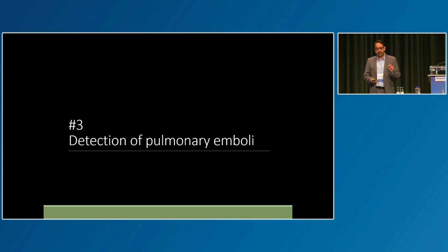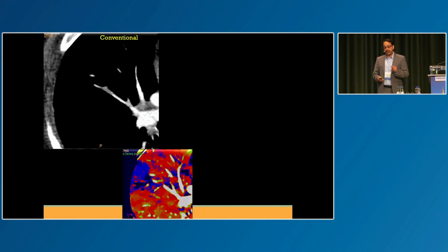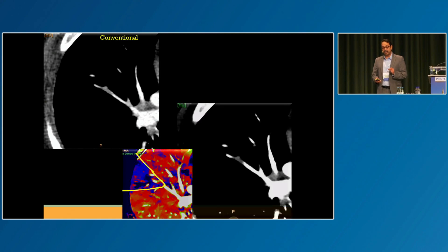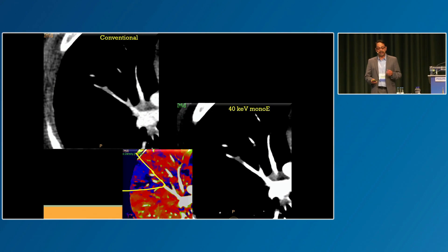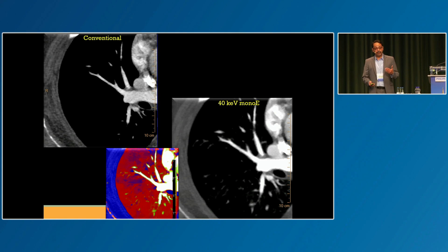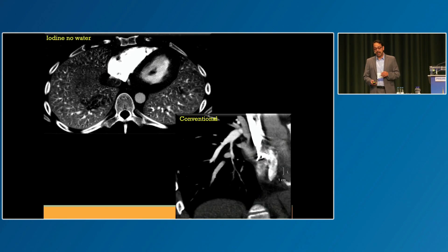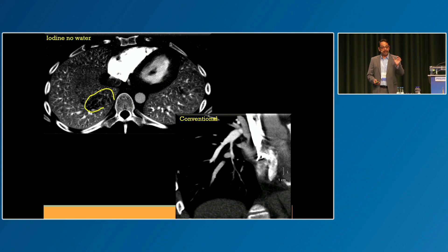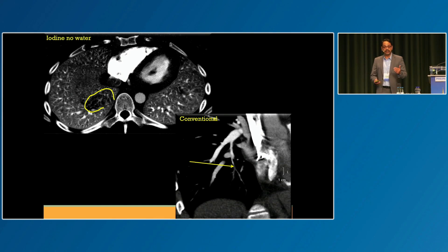It used to be that we could not diagnose sub-segmental PEs with any degree of confidence. But with spectral CT, I look for the perfusion defect on the iodine map, look at the 40 keV images, and you can diagnose this small sub-segmental PE with a really high degree of confidence. A month later, the study is repeated and the clot is gone. My residents actually start by looking at the iodine map to find the perfusion defect, then look for the sub-segmental PE. You can get a lot faster using spectral CT with these tricks.